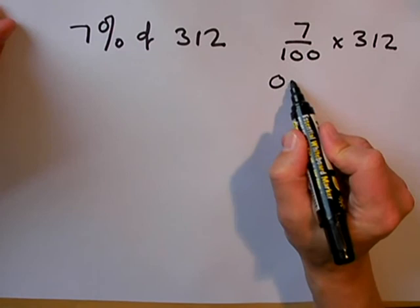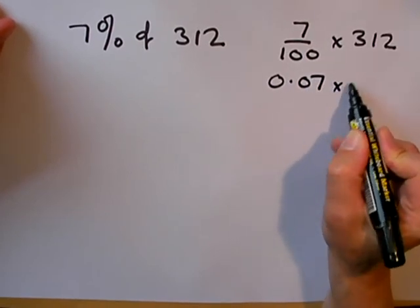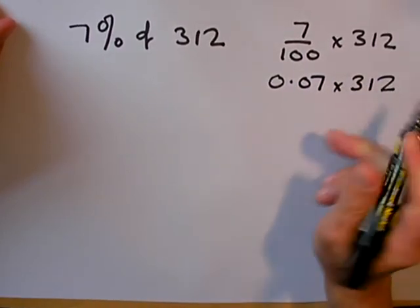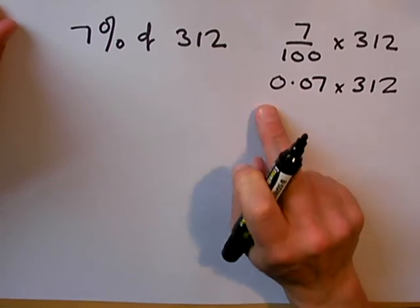0.07 multiplied by 312. Remember, because it's 7%, it's 0.07.